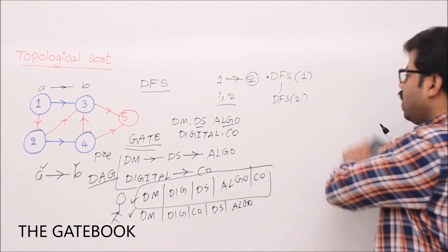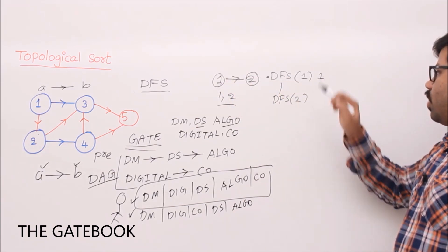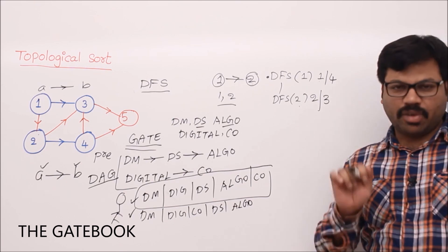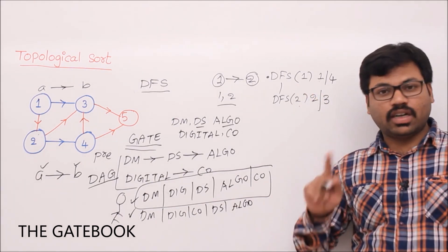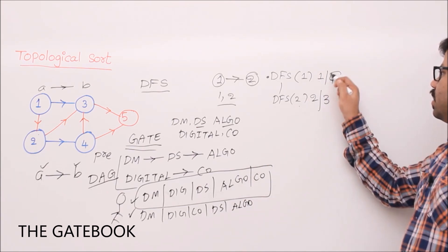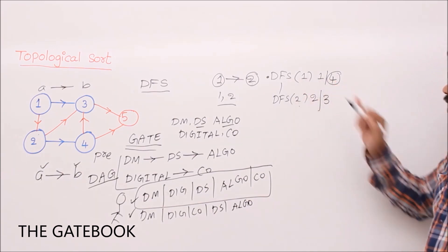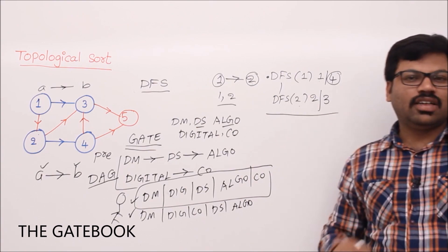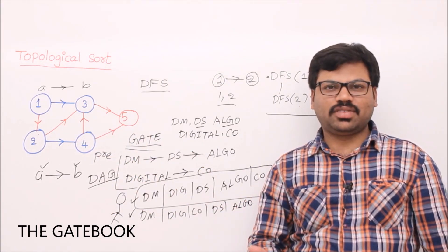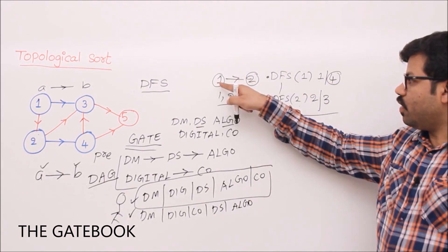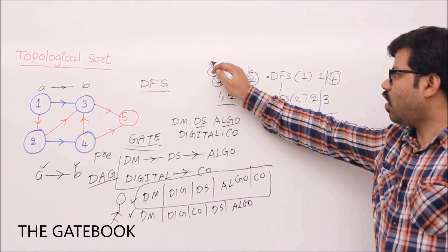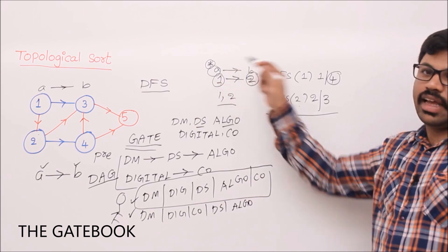If we find out the finishing times of every DFS call, then based on those we can sort them. For example, call DFS on 1: starting time 1, then DFS of 2 starts with time 2, DFS of 2 closes with finishing time 3, then DFS of 1 finishes at time 4. Finishing time of 1 is greater than finishing time of 2. Whenever there is an edge from A to B, the finishing time of A is greater, so A should be printed first.